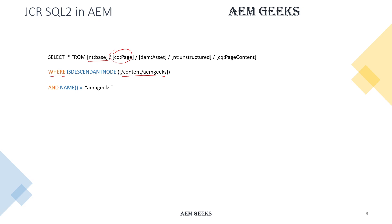You can add a condition using NAME(). Inside NAME(), you mention the name of the page or node you are selecting. For example, if you need a page with the name 'AEM Geeks', the result set will return the page matching that name.